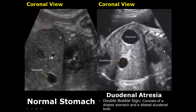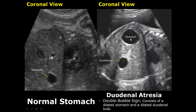Here is a coronal view of a double bubble sign. The stomach and the duodenum are both dilated in the setting of duodenal atresia.